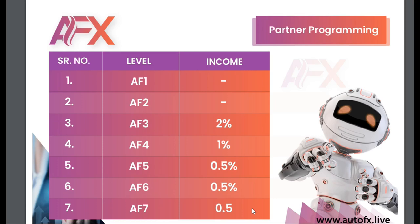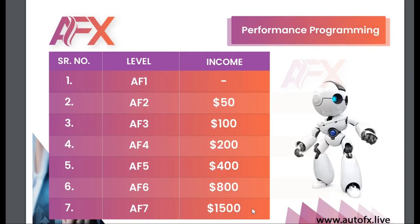It doesn't just end there. They also have performance programming — as you attain new ranks, the company pays you a bonus. When you become rank two they give you $50, rank three $100, rank four $200, rank five $400, rank six $800, and rank seven $1,500.